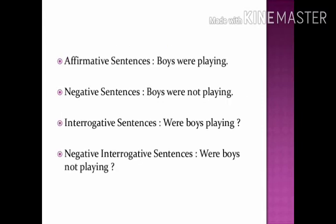The different types of sentences for past continuous tense: Affirmative — 'Boys were playing.' We put 'were' because the noun is in plural form. Negative — 'Boys were not playing.' Interrogative — 'Were boys playing?' Negative interrogative — 'Were boys not playing?'